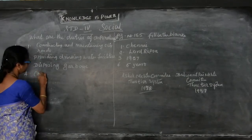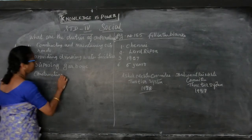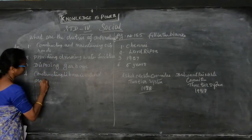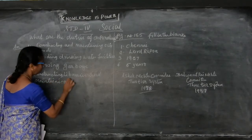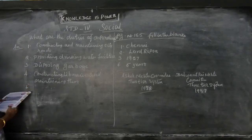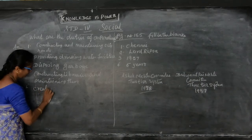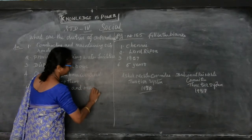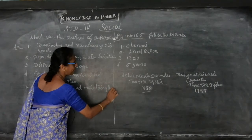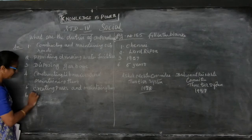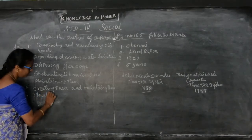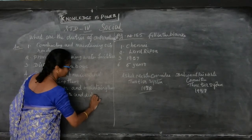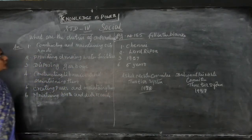Continuing the duties of the corporation: constructing libraries and maintaining them, creating parks and maintaining them, and maintaining birth and death records. So these are the duties of the corporation.